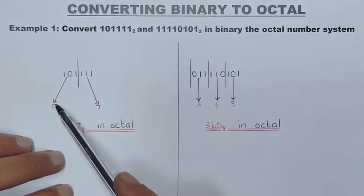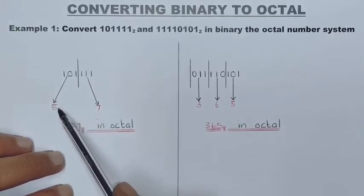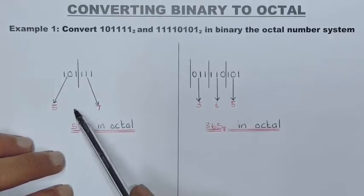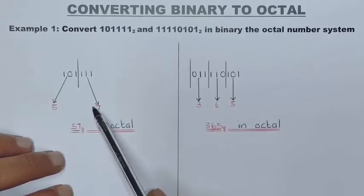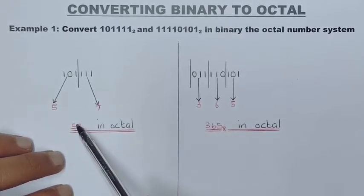All you need to do now is just combine the numbers, not add the numbers, because if I add it's 5 plus 7. Just combine the numbers together and that is going to be 57 in octal. Very simple.